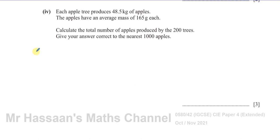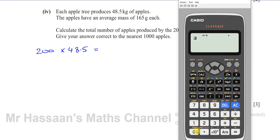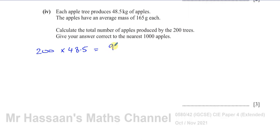So if you have 200 trees and each of them produces 48.5 kilograms of apples, if you multiply 200 by 48.5 that will give you the total kilograms of apples produced by the trees. So 200 multiplied by 48.5 gives you 9,700 kilograms of apples.